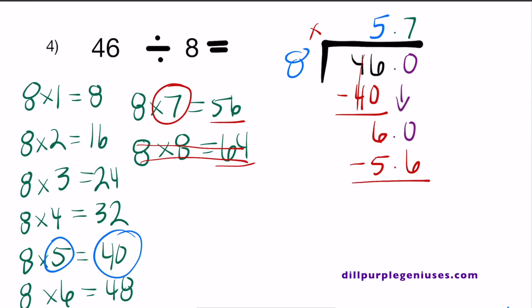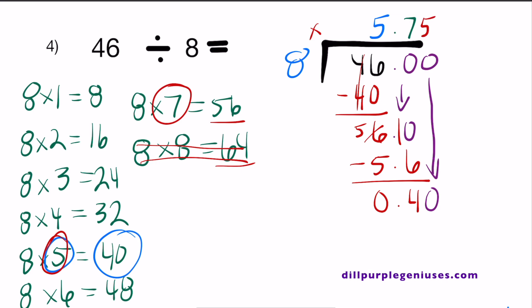Let's subtract. We have 0 minus 6, which doesn't work, so we take away 1 from the tens place: 6 turns into 5 and we have 10. 10 minus 6 is 4, then the decimal point, and 5 minus 5 equals 0. We now have 0.4. 8 does not go into 4, so we add another decimal place to the dividend — bring down a 0. How many times does 8 go into 40? From our list, 8 goes into 40 five times, so we write 5 above the 0. 8 times 0.05 equals 0.40, and when we subtract that from 0.40, we get 0. We are officially done. The answer to number 4 is 5.75.